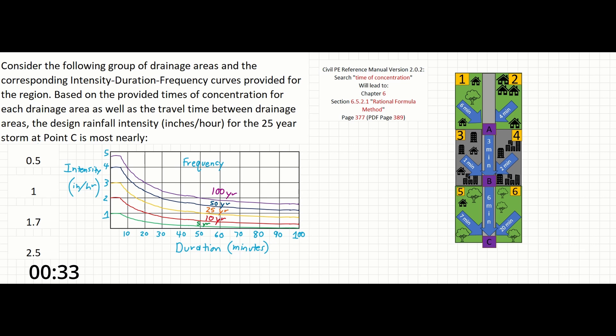Some of you probably understand what to do with this problem based on the problem statement, but for those of you who forget what time of concentration is, you can still search for that term in the reference manual to find the following definition. The time of concentration is the time required for the runoff to travel from the hydraulically most distant point of the watershed to the point of interest in minutes.